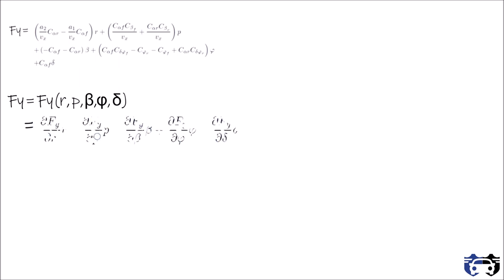From the equation of lateral force fy you can see lateral force depends upon the variables such as yaw rate r, roll rate p, angle beta, roll angle phi and steer angle delta. We can write lateral force in terms of partial differentiation of these variables. This gives us fy equals to cr multiplied by r plus cp multiplied by p plus c beta multiplied by beta plus c phi multiplied by phi plus c delta multiplied by delta.